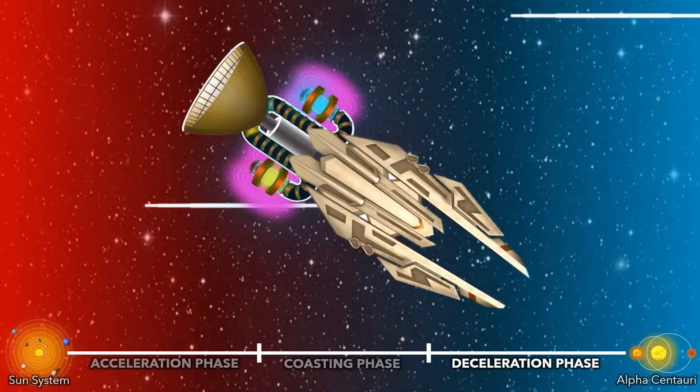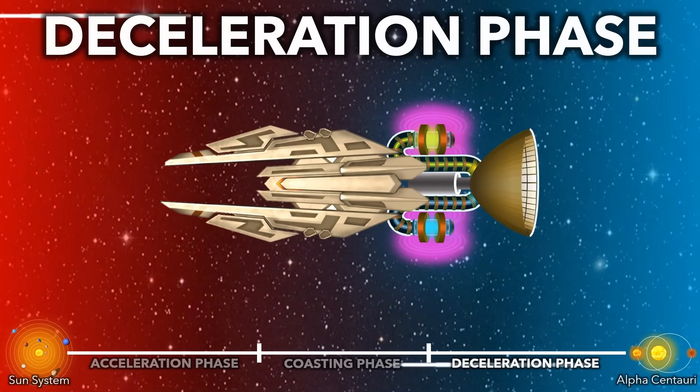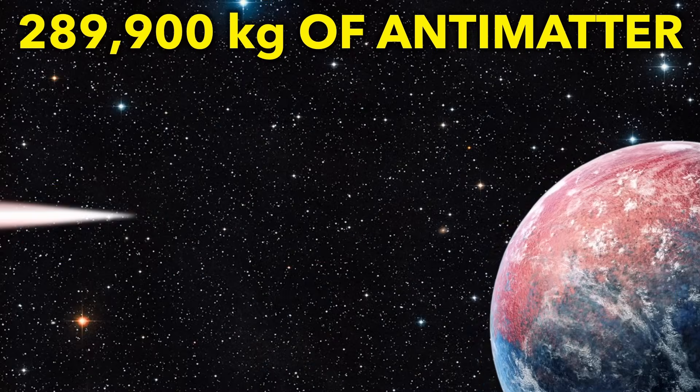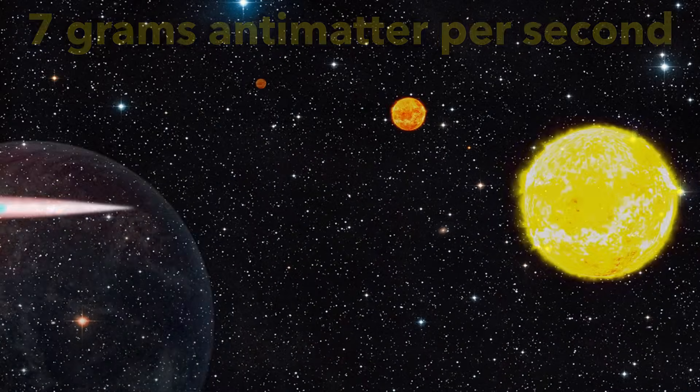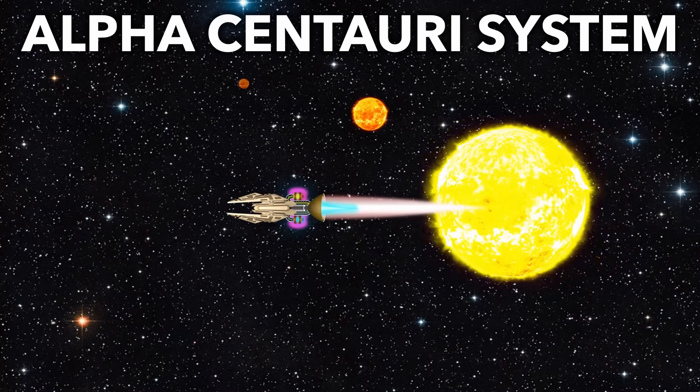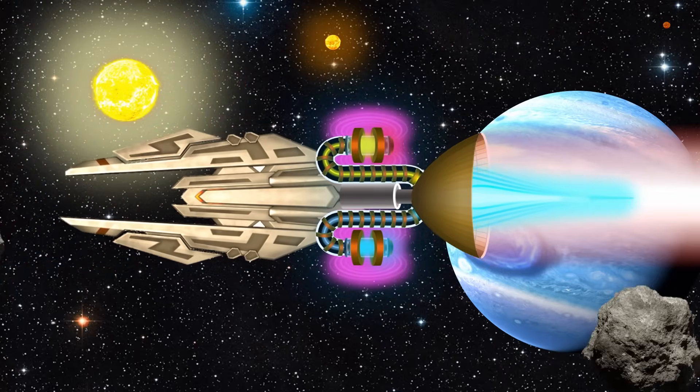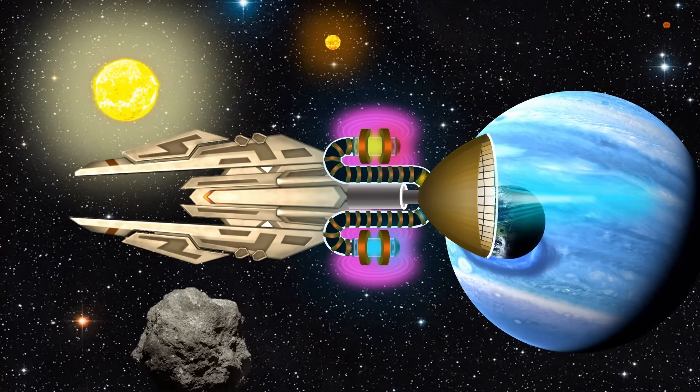Finally the ship flips around and begins decelerating, again at 1g, but this time only using 290 tons of antimatter, or 7 grams per second. After 8 years on Earth, or 6 on board the ship, we finally enter the Alpha Centauri system and come to rest.